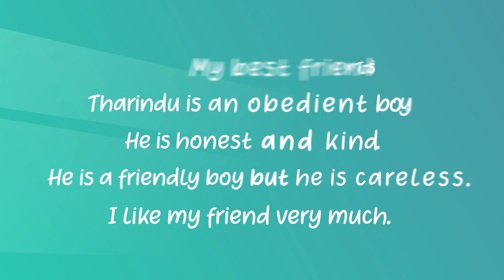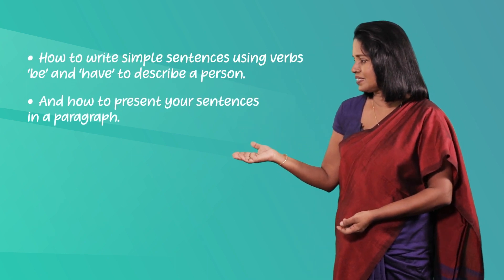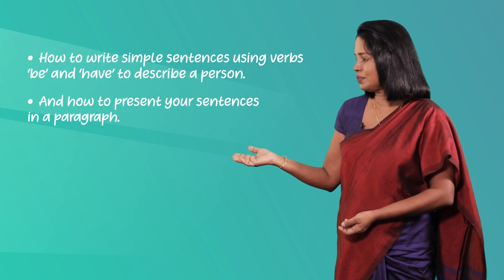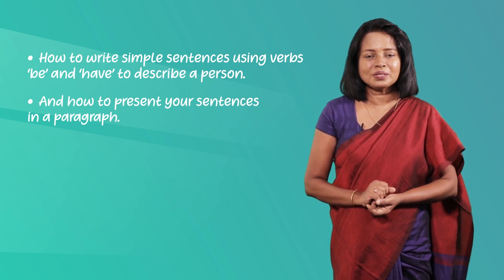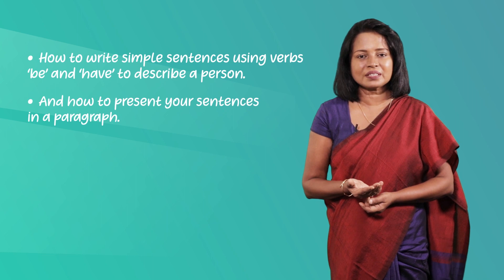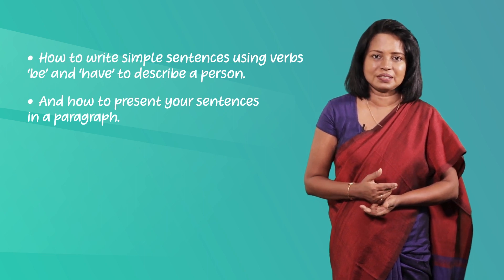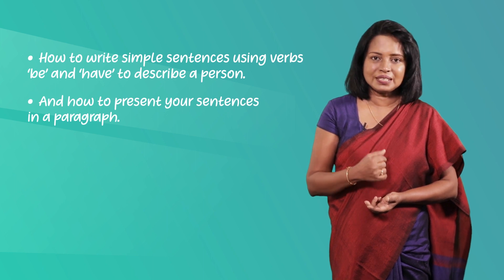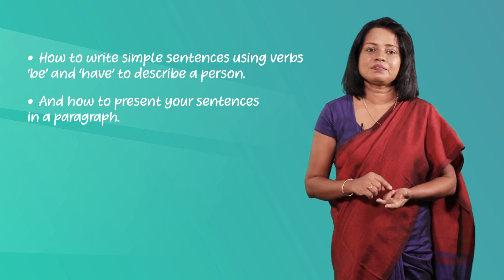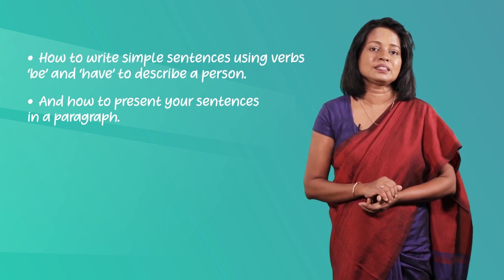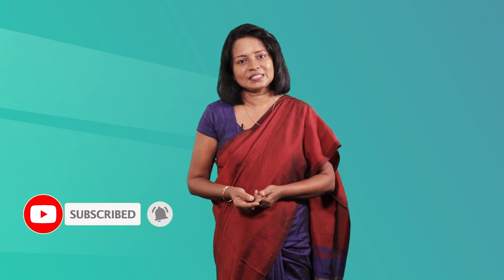Now we have come to the end of today's lesson. In this lesson we practiced how to write simple sentences using 'be' and 'have', and we also wrote simple descriptions of a person. In your O-Level paper you are asked to write a paragraph in about 50 to 60 words, and you are given two topics — usually like 'my best friend' or 'my favorite teacher' — and you have to select one and write. I hope this lesson was helpful and that you enjoyed it. Please subscribe to this channel. Goodbye.